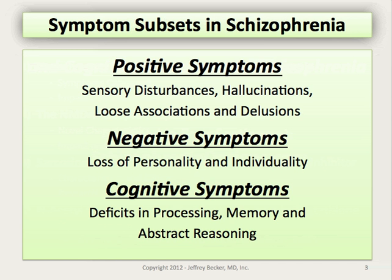Symptoms in schizophrenia can be broken out into a number of different categories. Positive symptoms, negative symptoms, and cognitive symptoms are the currently most common symptom categories that we use. The breakdown into different categories is helpful both for research and for treatment planning, because there are different treatments that affect these different arenas differently.